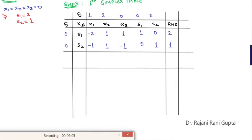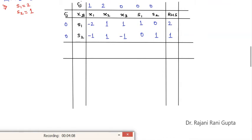Now what is the next step? Next step is to calculate the value of zj and cj minus zj. zj is 0 multiply minus 2. 0 multiply minus 1 gives you 0. So as these both numbers are 0, we will get zj as 0 for all these values. Now we will calculate cj minus zj. So which is 1 minus 0, which is 1. 2 minus 0, 2. 0, 0, and 0.